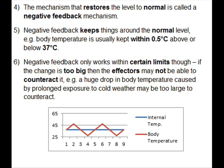Negative feedback keeps things around the normal level. For example, body temperature is usually kept within 0.5°C above or below 37°C. Negative feedback only works within certain limits though — if the change is too big, the effectors may not be able to counteract it. For example, a huge drop in body temperature caused by prolonged exposure to cold weather may be too large to counteract.